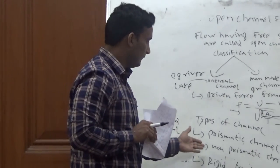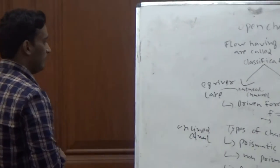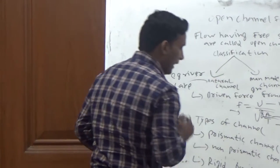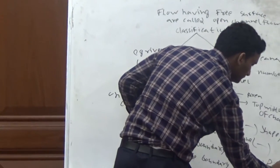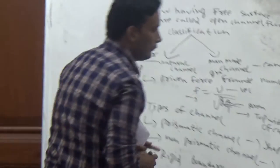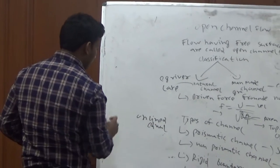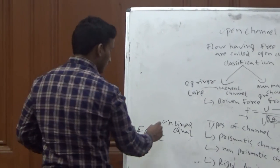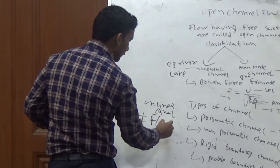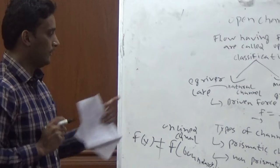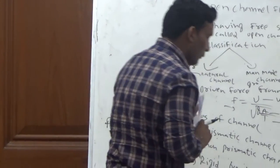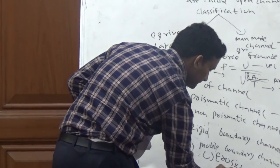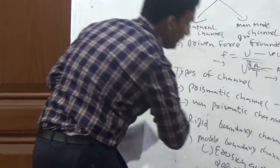Then comes rigid boundary channels and mobile boundary channels. Rigid boundary channels have rigid boundaries which cannot be deformed. For mobile boundary channels, the boundaries are mobile and erosion and deposition occurs in the channel.